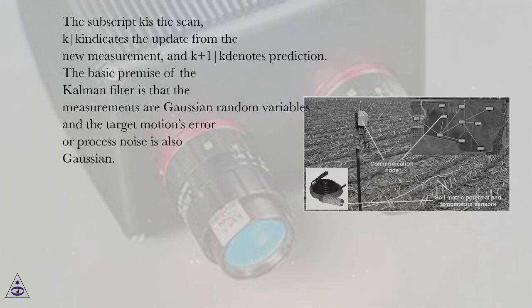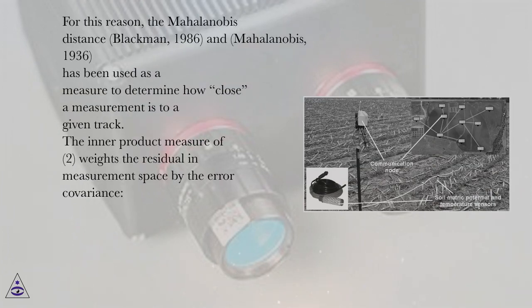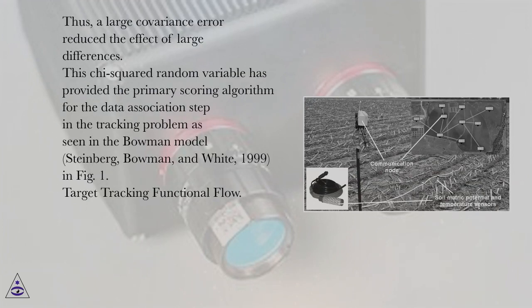The basic premise of the Kalman filter is that the measurements are Gaussian random variables and the target motion's error or process noise is also Gaussian. For this reason, the Mahalanobis distance (Blackman, 1986, and Mahalanobis, 1936) has been used as a measure to determine how close a measurement is to a given track. The inner product measure of d² weights the residual in measurement space by the error covariance. Thus, a large covariance error reduces the effect of large differences.